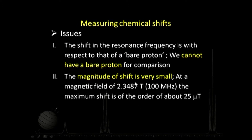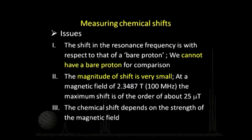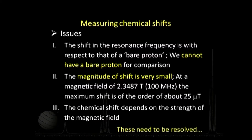The second issue is that the magnitude of chemical shift is very small. If we use a magnetic field of about 2.3487 tesla, which corresponds to about 100 megahertz of frequency, the maximum shift we can expect to observe is of the order of about 25 micro-tesla — which is a very very small number compared to the 2.34 tesla applied field. The third issue is that chemical shift actually depends on the strength of the magnetic field, so we cannot have a unique number for a given signal.